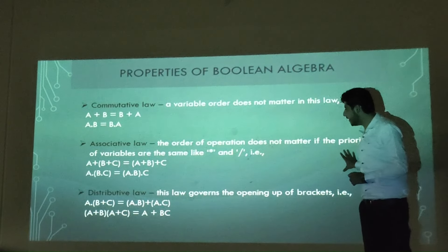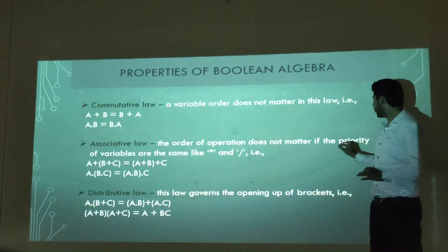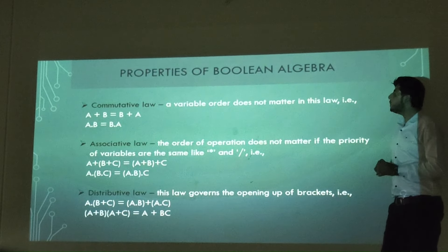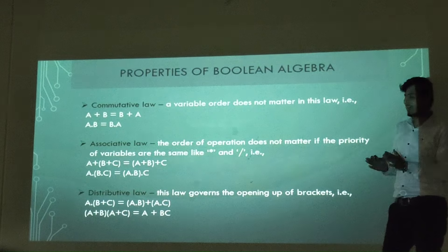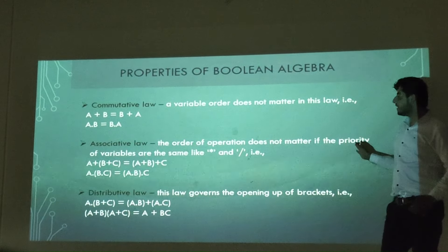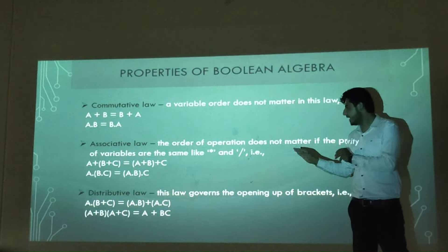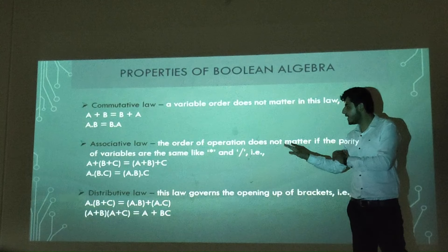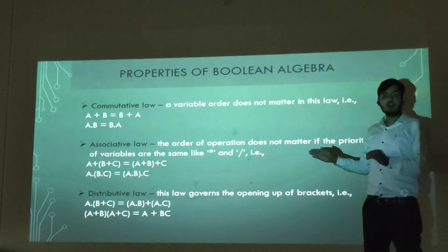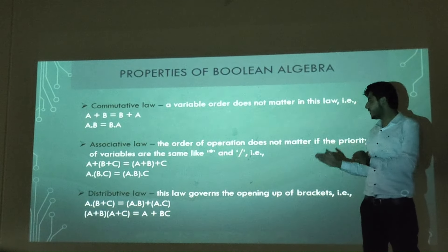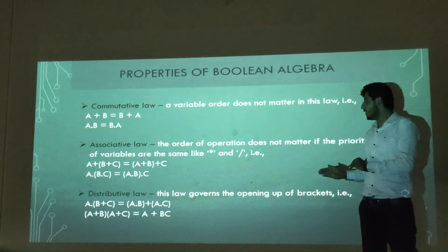The next law is the associative law. In this law, the order of operations does not matter if the operations have the same priority. As you can see, a plus (b plus c) equals (a plus b) plus c, and a dot (b dot c) equals (a dot b) dot c.